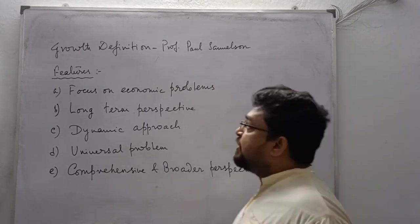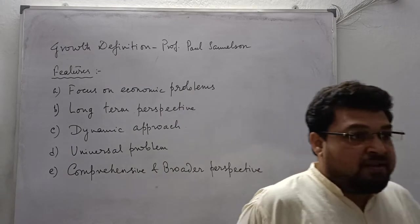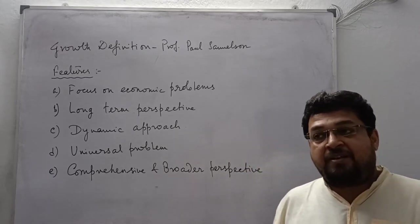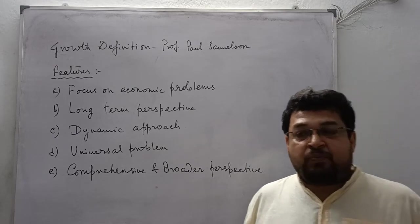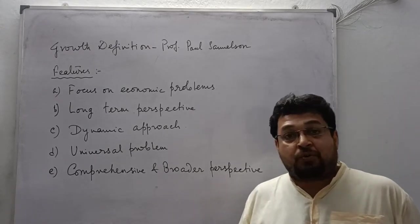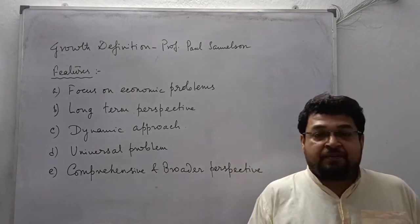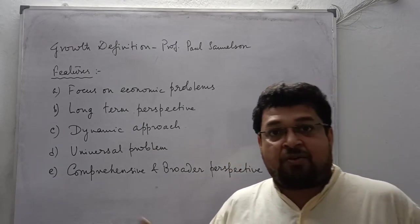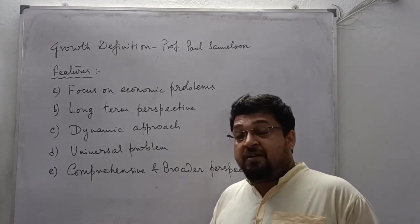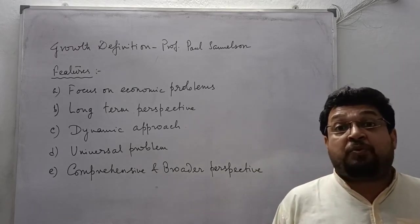Once we have learned the growth-oriented definition by Paul Samuelson, where he considered human behavior, the income-earning aspects, the problem of choice, and scarcity as given by Robins, and the welfare aspect given by Marshall — he also incorporated the growth part: how resources are distributed among people and across time, for the present and future generations. He incorporated more from the definitions of Robins and Marshall.